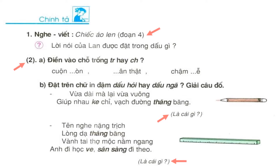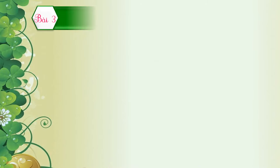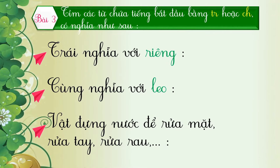Các bạn vừa được ôn luyện lại cách phân biệt vần 'ắc' hay 'ặc'. Bài tập số 3 sẽ giúp chúng ta phân biệt được các từ mà có âm đầu là 'tr' hoặc 'ch'. Bài 3: Tìm các từ chứa tiếng bắt đầu bằng 'tr' hoặc 'ch' có nghĩa như sau. Các em hãy tìm các từ theo yêu cầu và viết vào sách giáo khoa hoặc vở nháp.